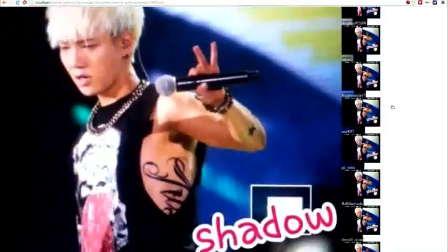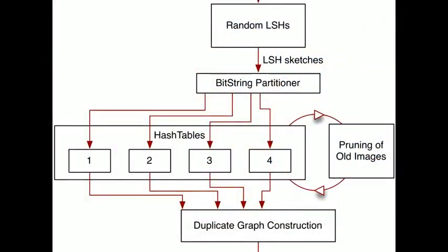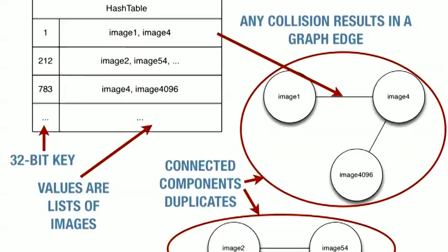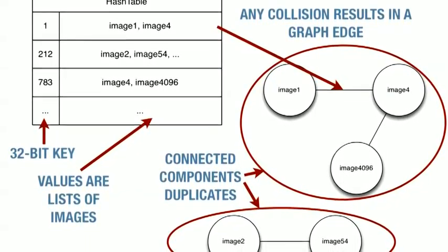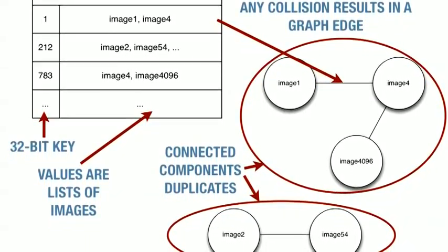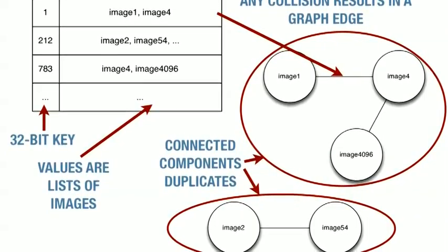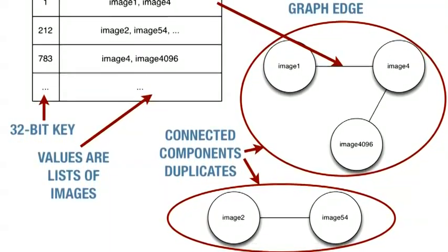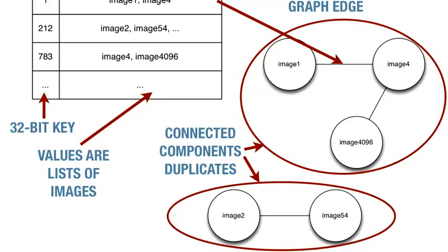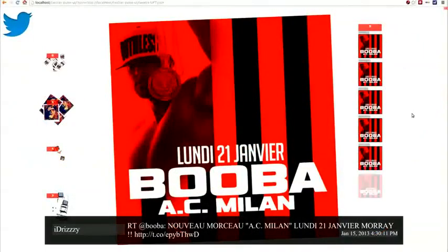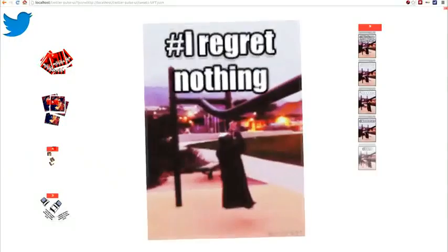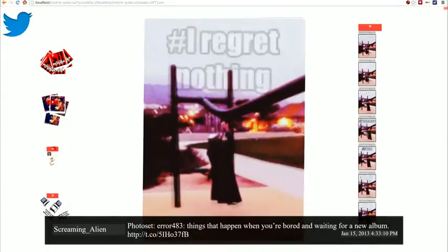To detect near-duplicates in these images, we build an undirected weighted graph where the vertices are images and the edge weights represent the number of matching local features in the images. Feature matches are calculated using locality sensitive hashing of SIFT features. We can then prune weak edges and use connected component analysis to find near-duplicate groups, the largest of which are delivered to a JSON file which the visualisation uses as its source.